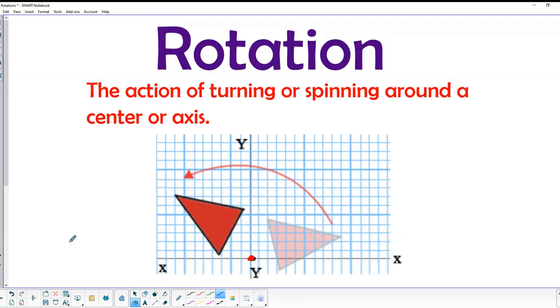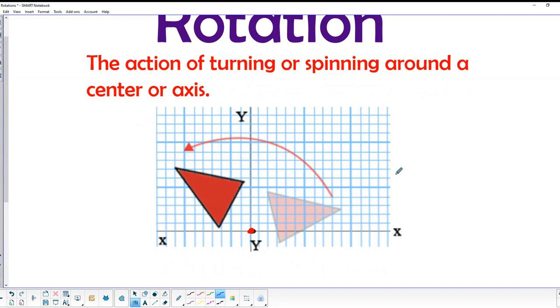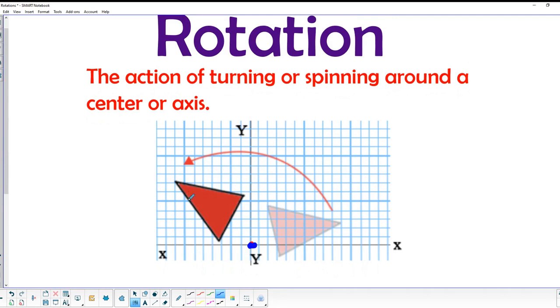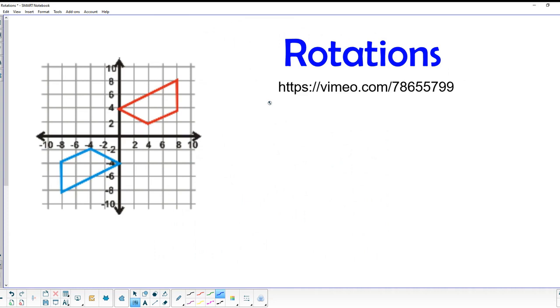Now today we're going to be talking about rotations. Rotation is an action of turning or spinning around a center or axis, usually the origin or some other point that we designate. So we take a shape, like in this case a triangle, and just rotate it either counterclockwise or clockwise around the origin or some other point, and then describe the characteristics of that shape once it's been rotated.